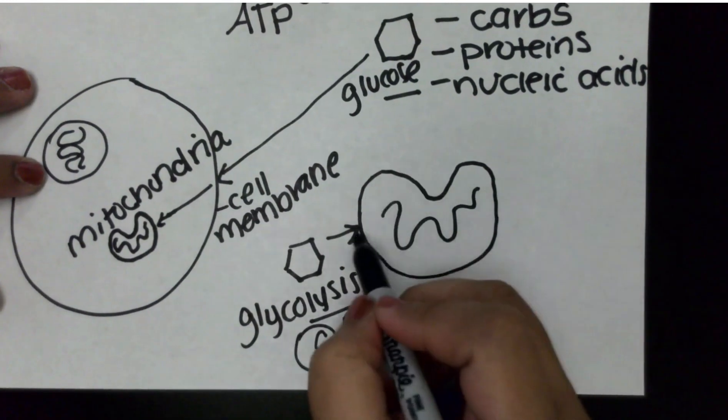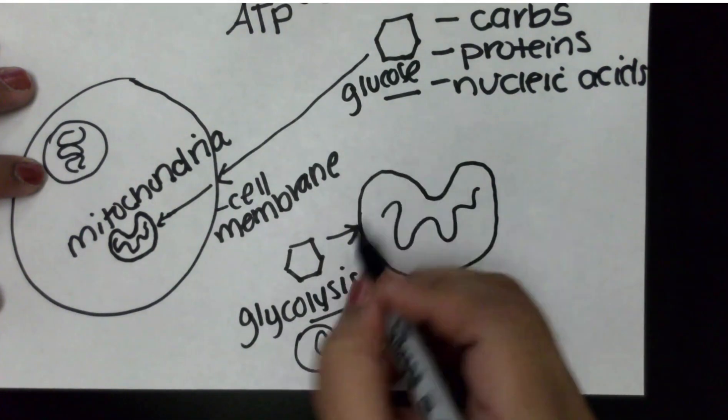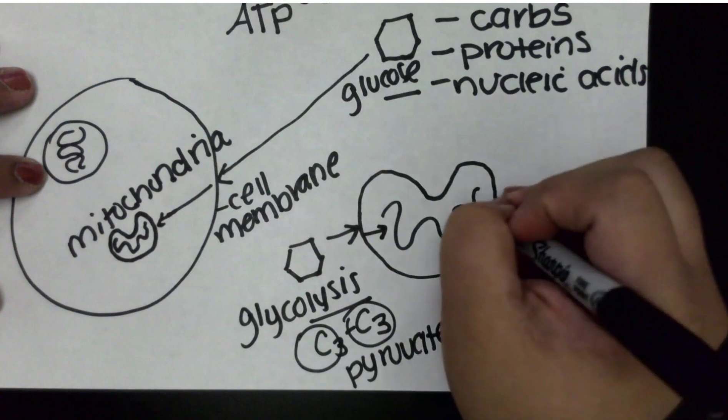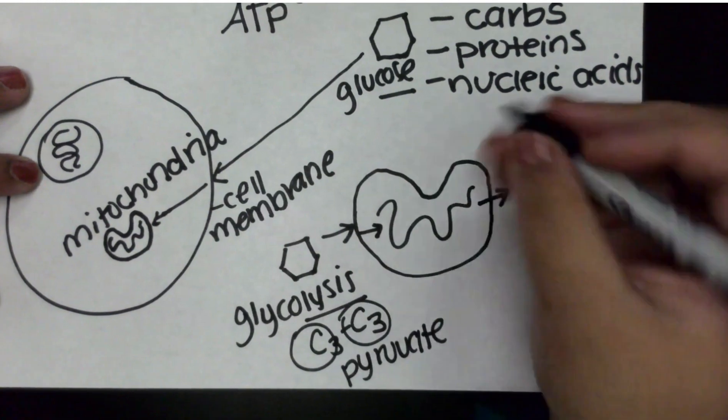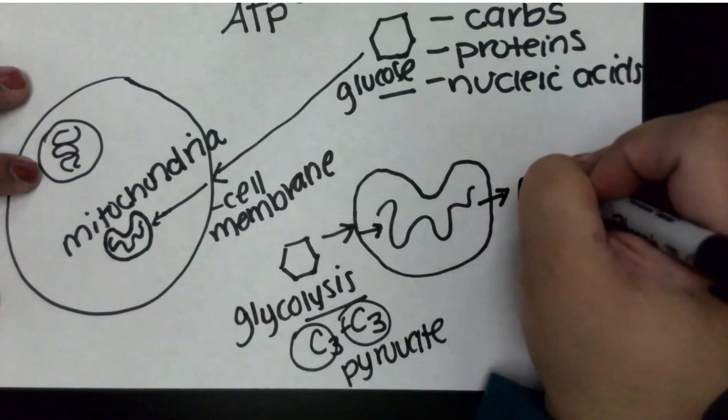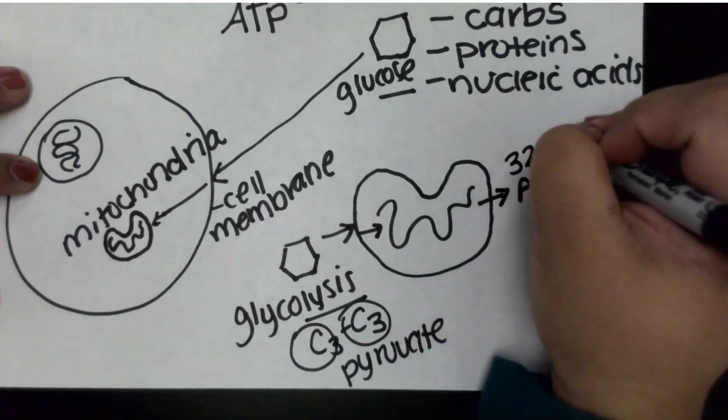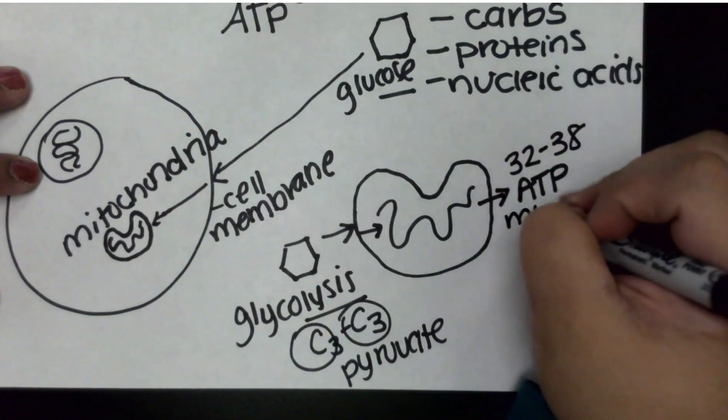And once we have pyruvate, those smaller glucose molecules can now go inside the mitochondria. And out will come ATP—anywhere between 32 to 38 ATP molecules.